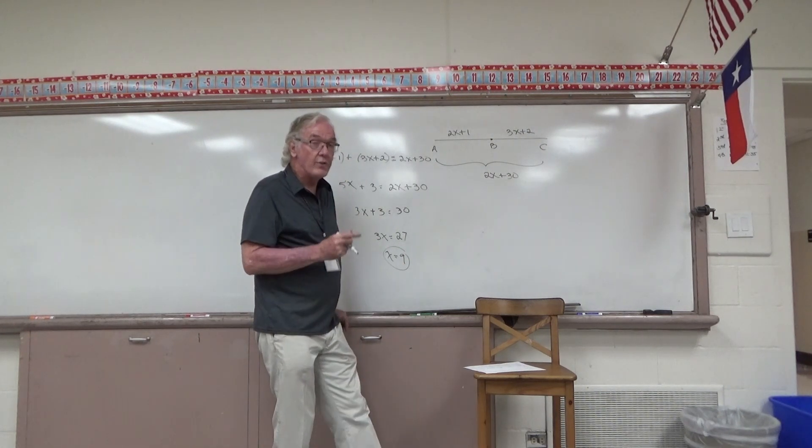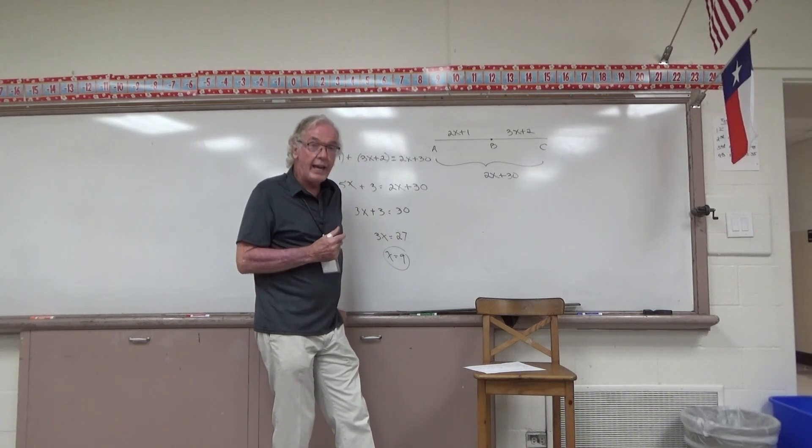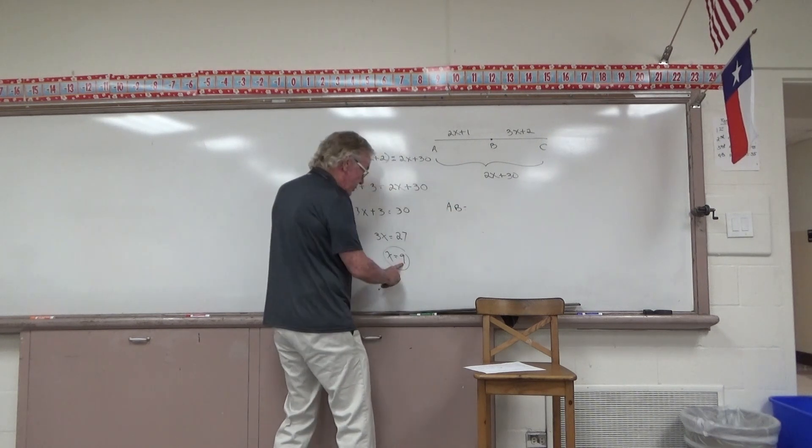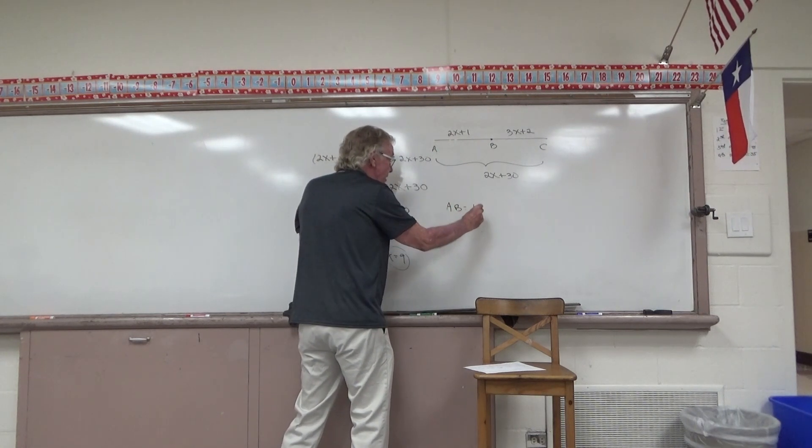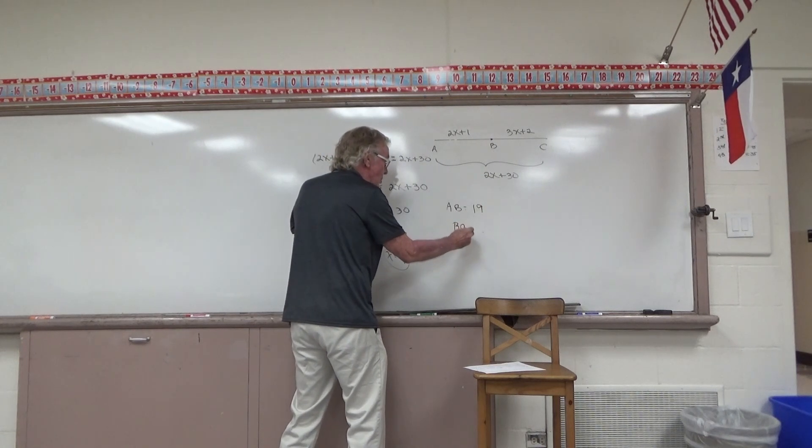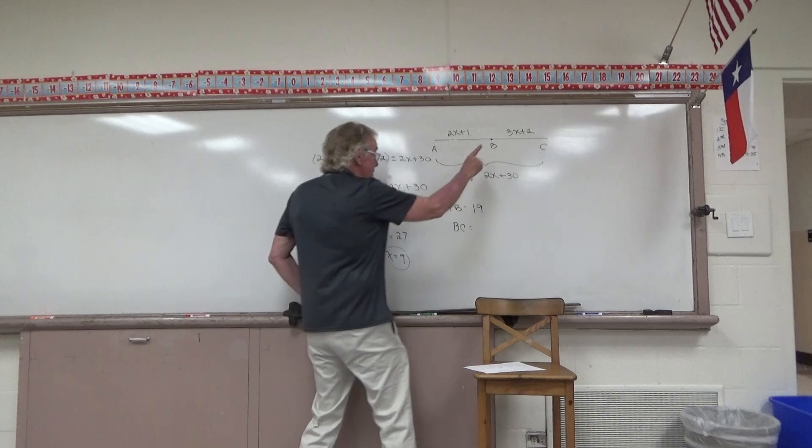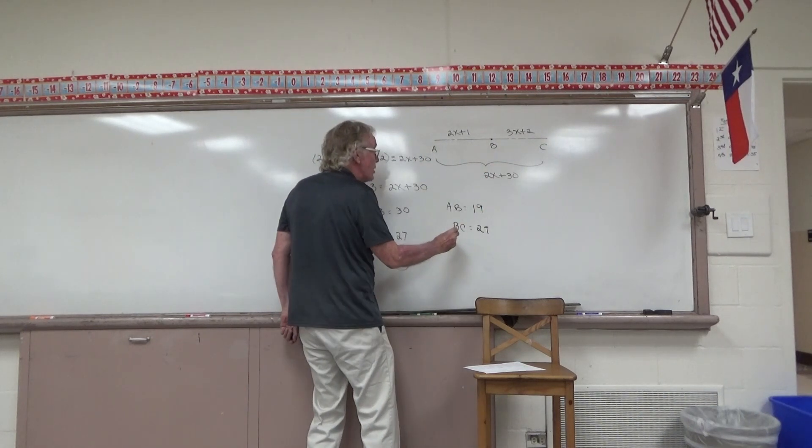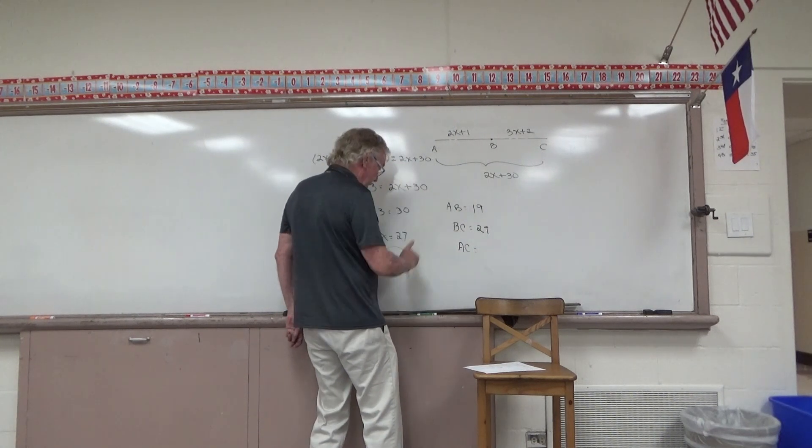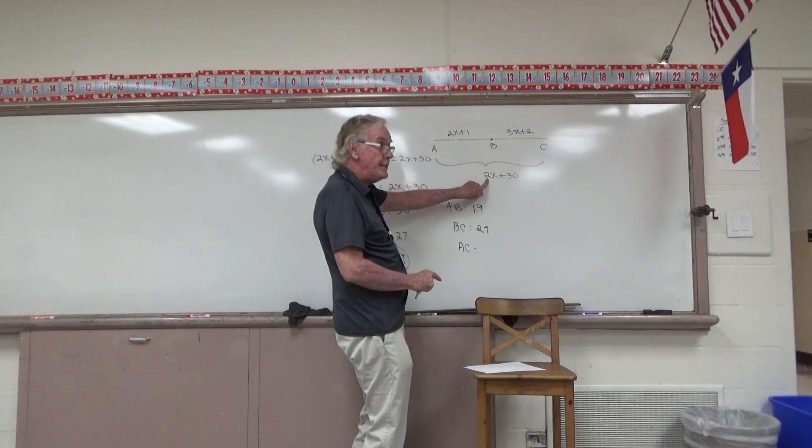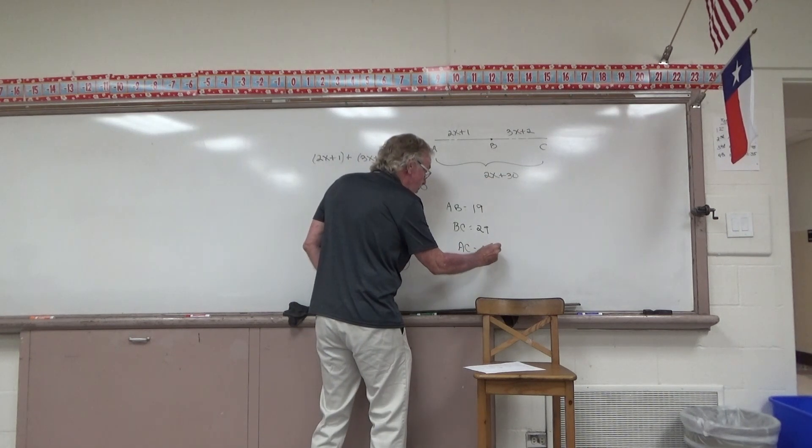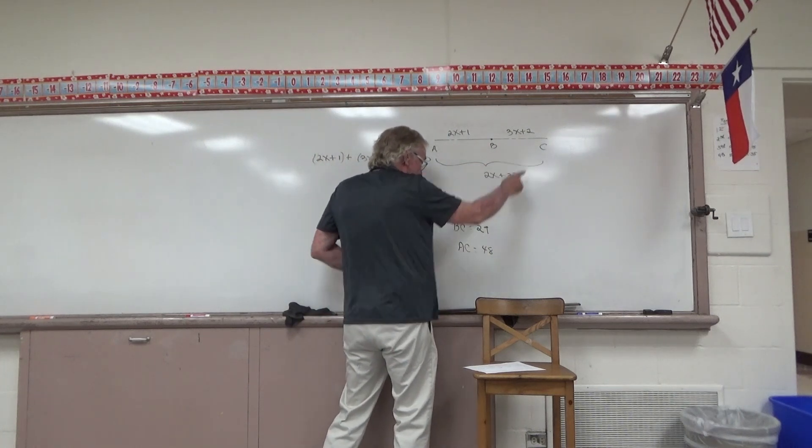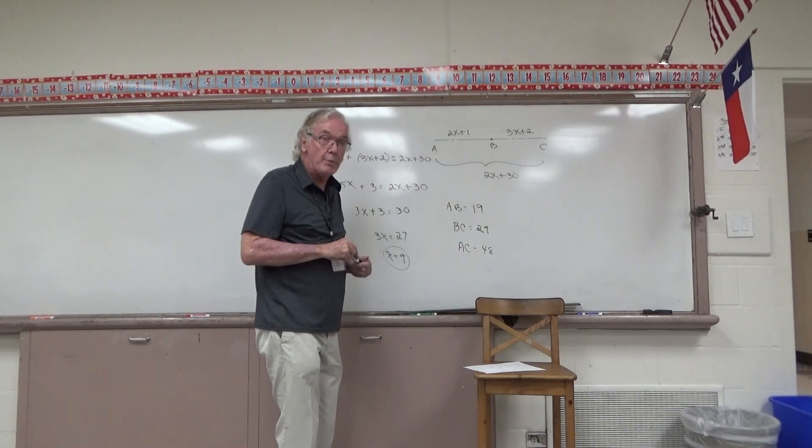Not quite finished. Let's go find the lengths of those three segments and see if they add up like they should. AB, if X is truly 9, 2 times 9 is 18 plus 1, that's got to be 19. And BC, if X is truly 9, 3 times 9 is 27 plus 2 would be 29. And then looking for the length of AC, X being 9, so 2 times 9 is 18 plus 30 would be 48. I'm pleased. I see that 19 for this length and 29 for that length adds up to 48. So I'm happy with that one.